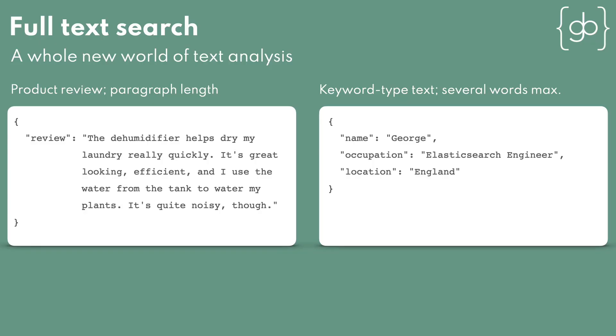One difference between this sort of text and the type of text we've stored in keyword fields so far is the length of the text. Keyword fields are used to store shorter pieces of text where exact or almost exact matching is frequently done. Paragraph length text like this, by nature, is going to require a different set of tools for matching. If we store the data in a keyword field and wanted to find reviews that mention drying laundry quickly, our options are pretty limited.